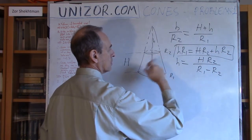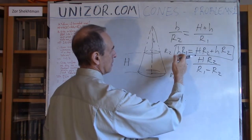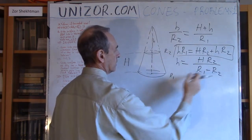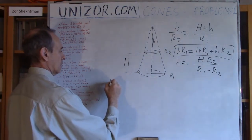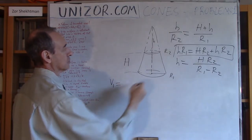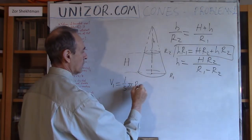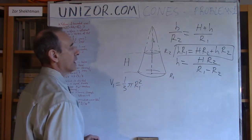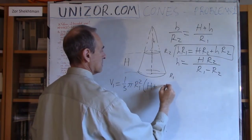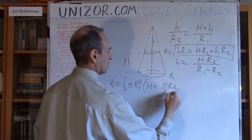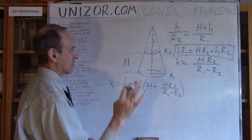Knowing h, we can calculate the big cone volume V1: it is one-third π R1² times the total height, which is H plus h, which equals H plus H·R2/(R1 − R2). Using the common denominator, H + H·R2/(R1−R2) = H·R1/(R1−R2). So V1 = (1/3)π R1² · H·R1/(R1−R2). Then we subtract the small cone: (1/3)π R2² · H·R2/(R1−R2).